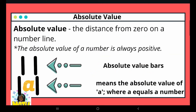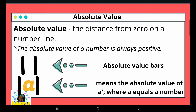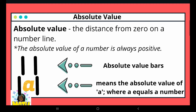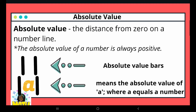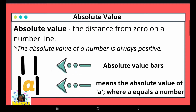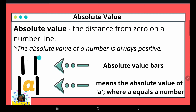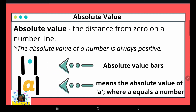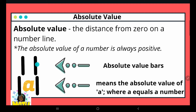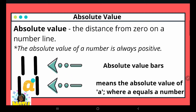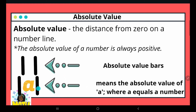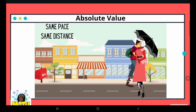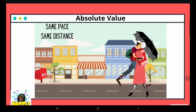Welcome back. Today we'll be talking about absolute value. The absolute value is the distance from zero on a number line — how far a number is, whether negative or positive, from zero. The absolute value of a number is always positive. These bars represent the symbol for absolute value, with a number — whether negative or positive — inside those bars.